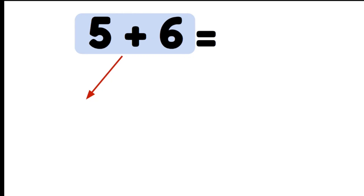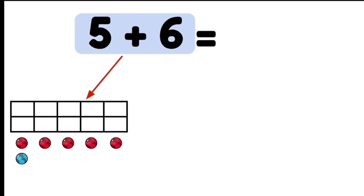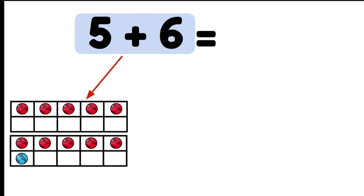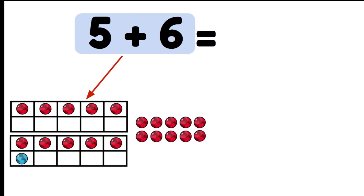If we look at five plus six, what double could we use? Yes, we could use double five. Double five is ten — five plus five is ten — so then we just add the extra one. Ten and one more makes eleven, so five plus six equals eleven.